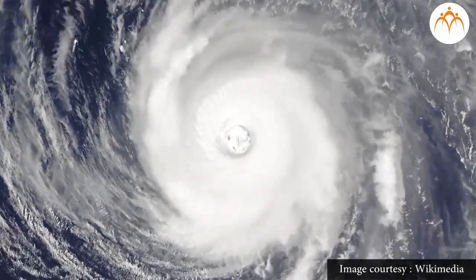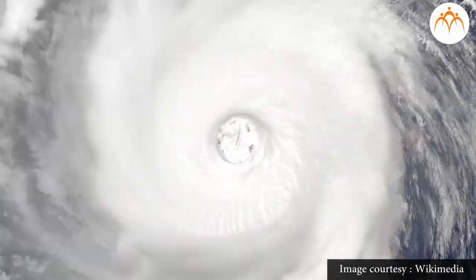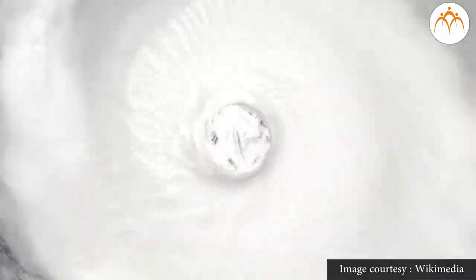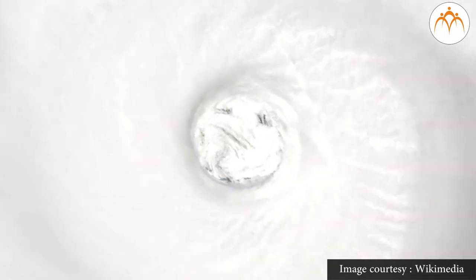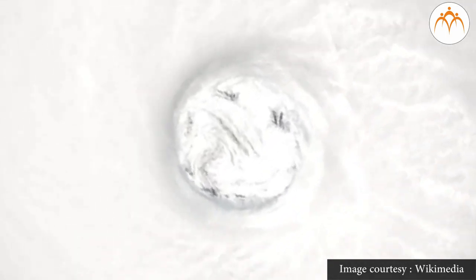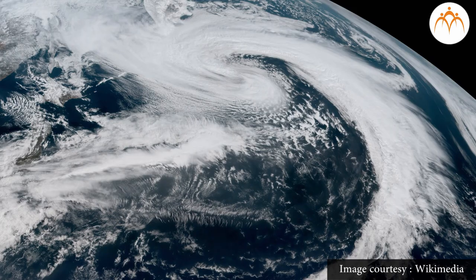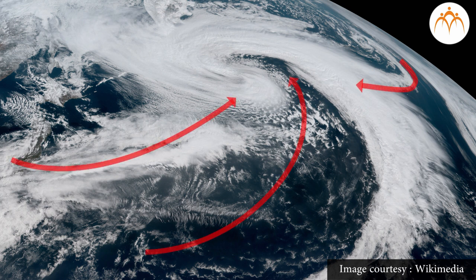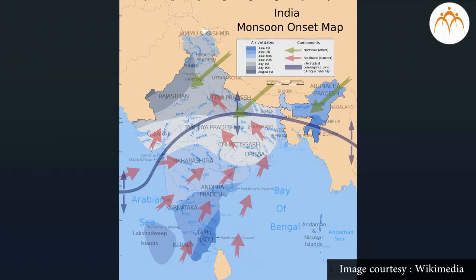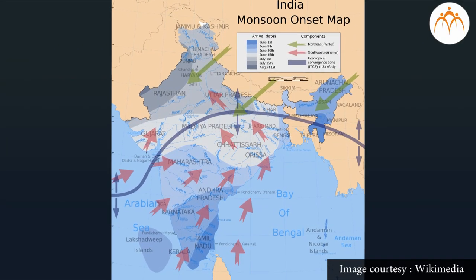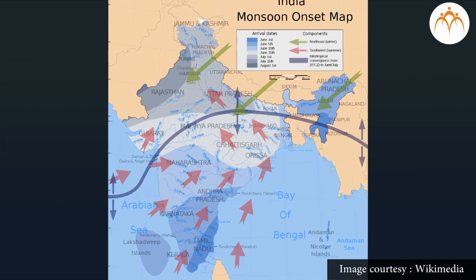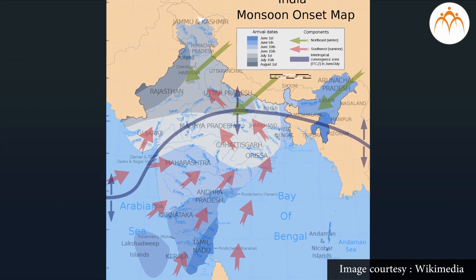Do you know that cyclones are formed because of the difference in air pressure at two different places? The air starts flowing from the place at higher air pressure to the place at lower air pressure. This is also responsible for monsoons in our country, India.